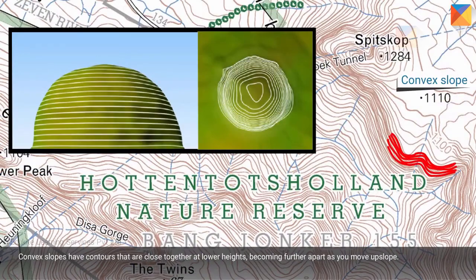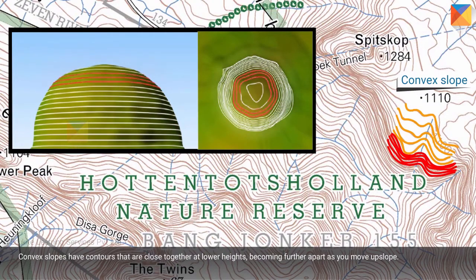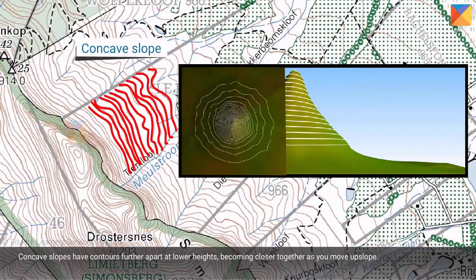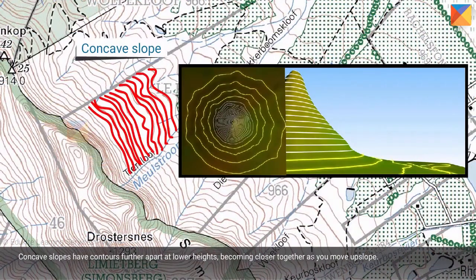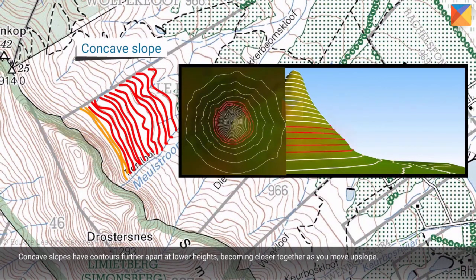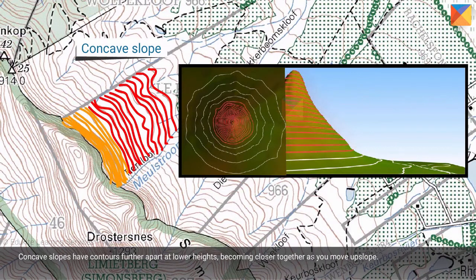Convex slopes have contours that are close together at lower heights, becoming further apart as you move up the slope. Concave slopes have contours further apart at lower heights, becoming closer together as you move up the slope.